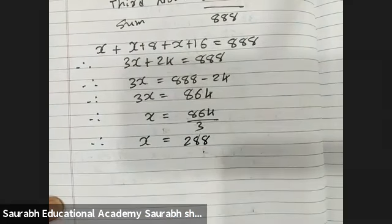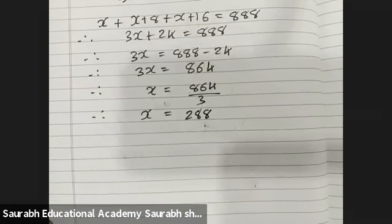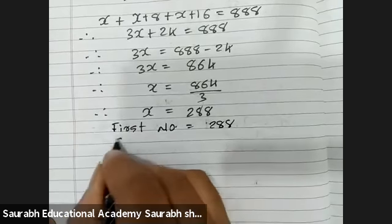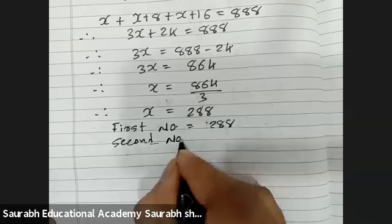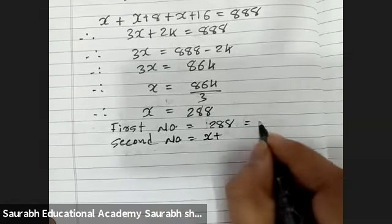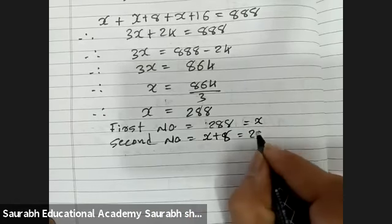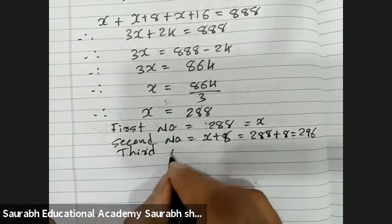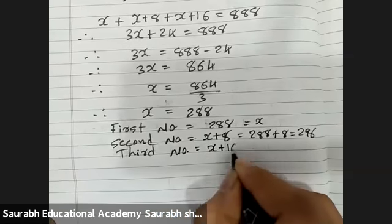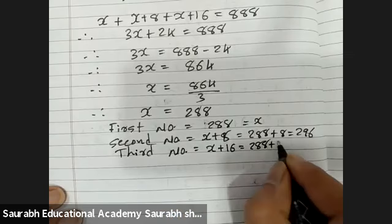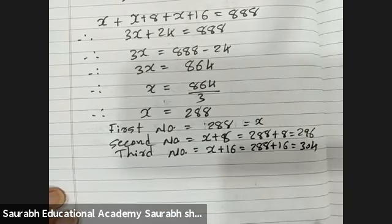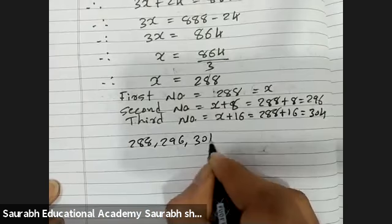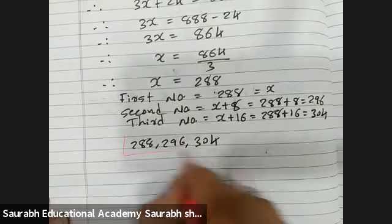x equals 288. So the first number is 288. The second number, x plus 8, is 288 plus 8 equals 296. The third number, x plus 16, is 288 plus 16 equals 304. The three numbers are 288, 296, and 304. These are the final answers.